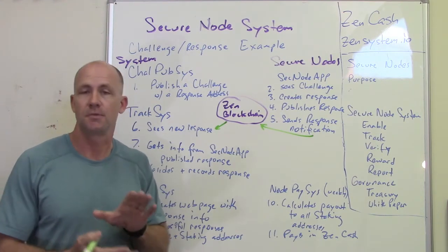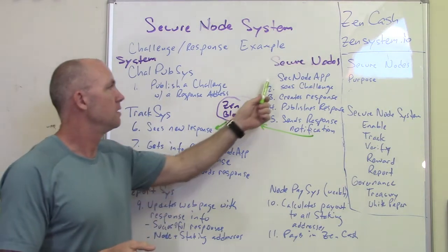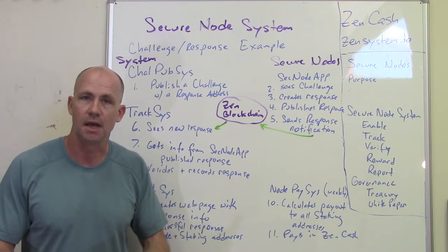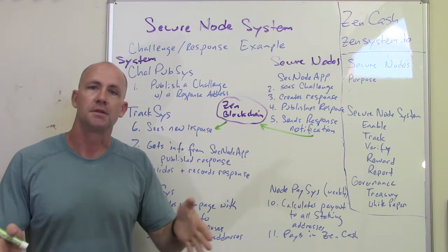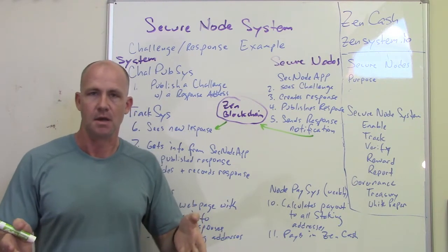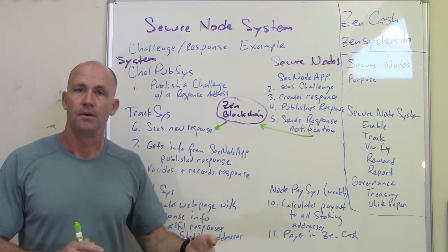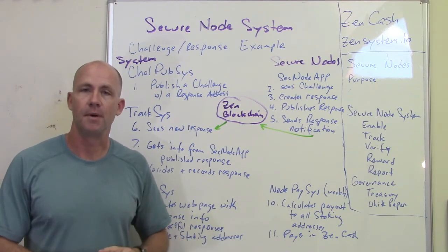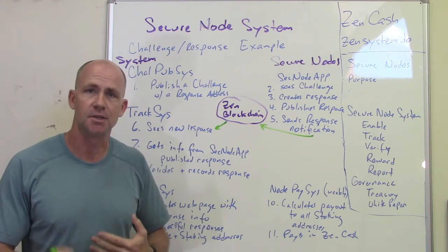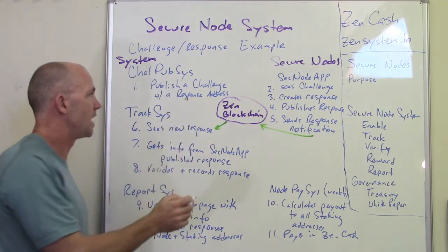And then it publishes that information on a port in JSON format — the public SSL certificate and the encrypted block of text that is the response. That's great that it's published it, but nobody knows that it's there. So then what the secure node app needs to do is create a shielded transaction — a Z transaction — and in that memo field it's going to provide the fully qualified domain name, or it could just be the IP address and port, of where that response can be found. Then that Z transaction gets created and published to the blockchain, going to the response address.